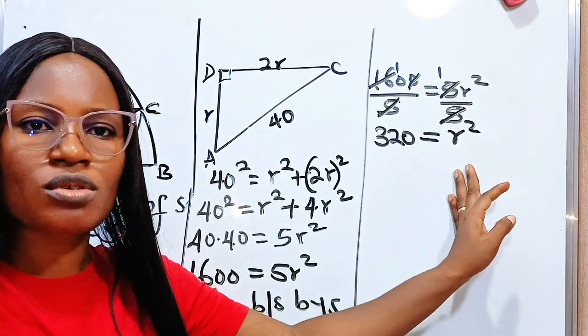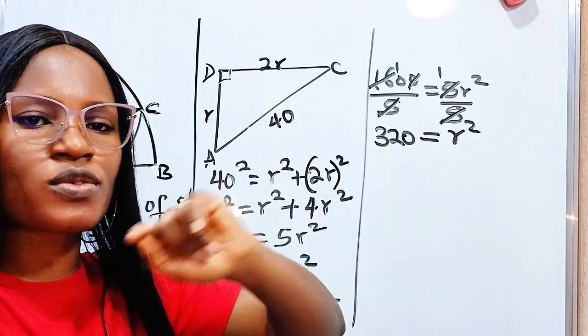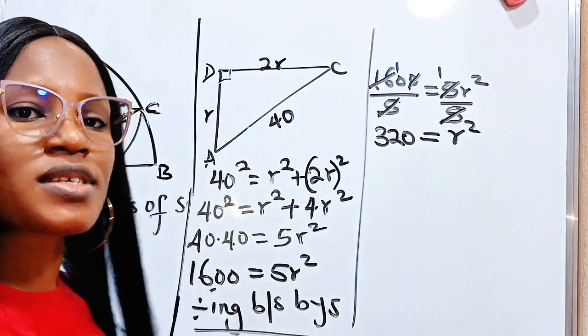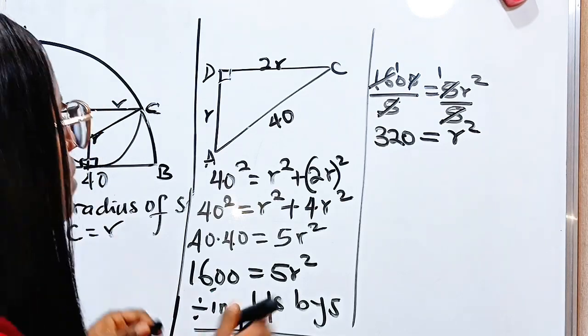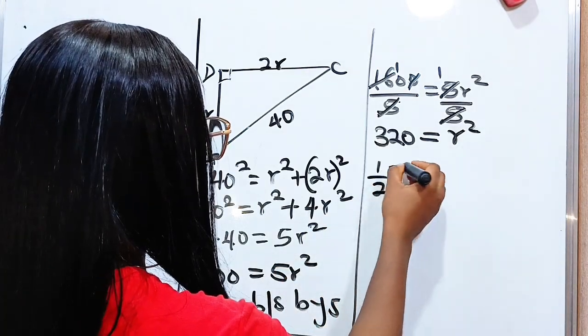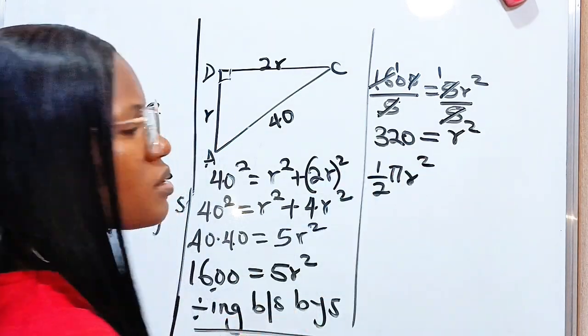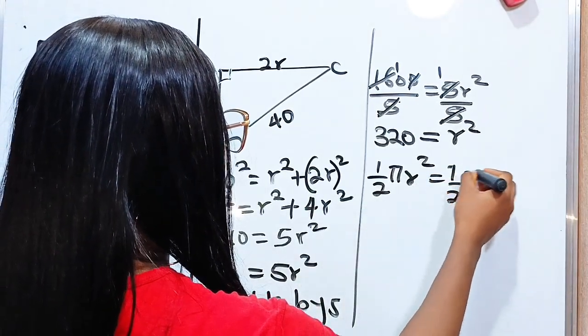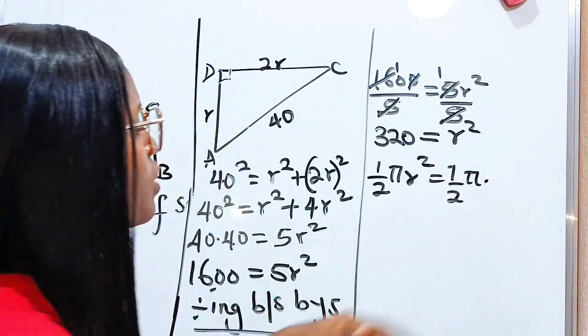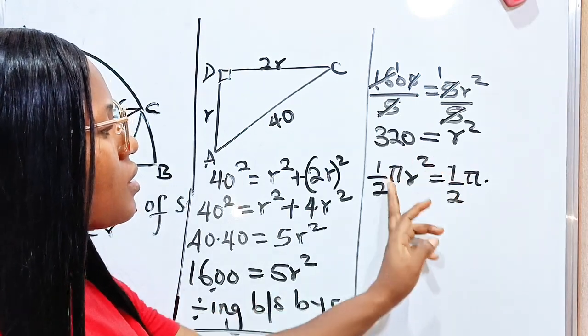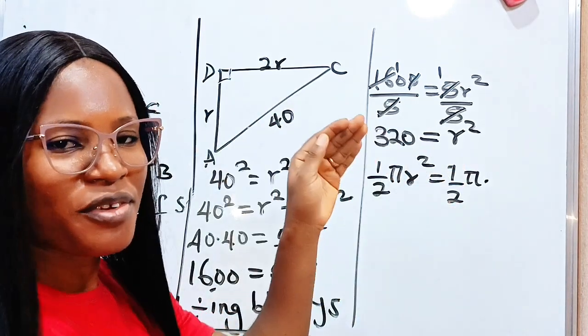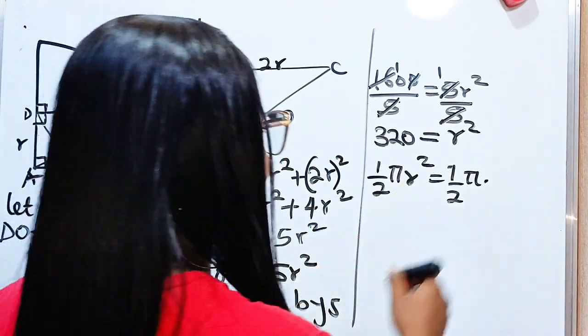We are not going to get the value of r. We are asked to find the area of the semicircle. Area of a semicircle is half π r². This equals half π times 320—that's why I didn't bother trying to get the value of r. So r² is 320.